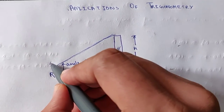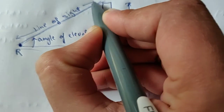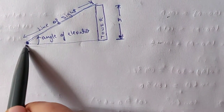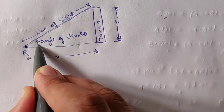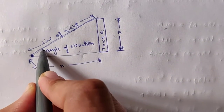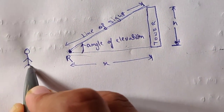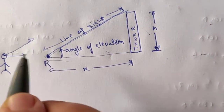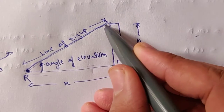There is a tower of height h. You are standing here at distance x from the tower. The angle formed when you look at the top of the tower is called the angle of elevation — because your eyesight is elevated. Normally you look straight ahead, but to see the top of the tower you must elevate your eyesight. The line along which you look is the line of sight.